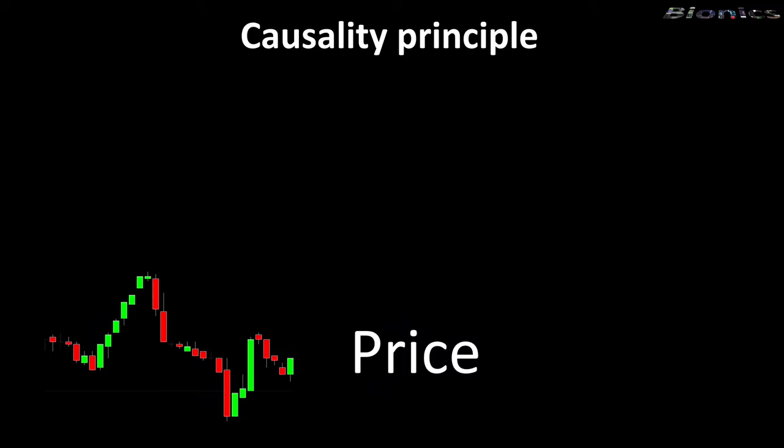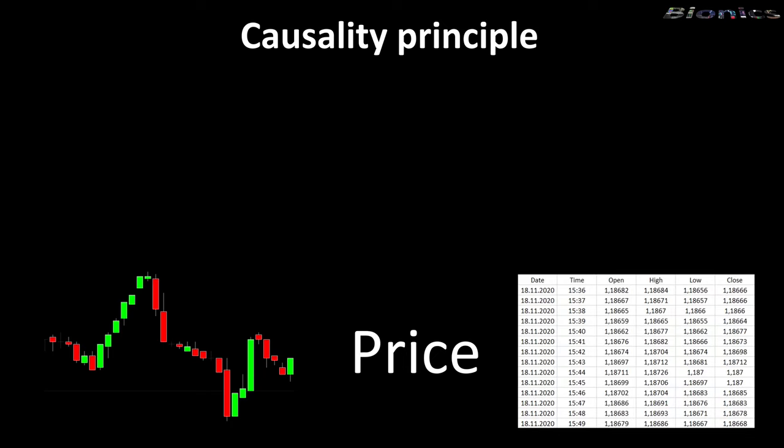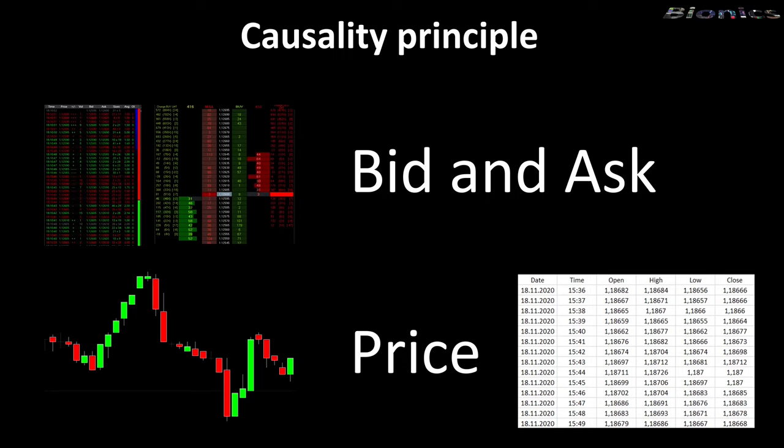Here we see a normal candlestick chart, and that is actually an indicator that is calculated from the price and the time. Normally we would only get this price information from the broker. Our chart translates this price information into different candles. Of course the candlestick chart is the fastest indicator in the forex market, but it is definitely an indicator.